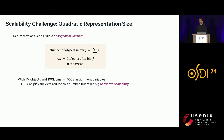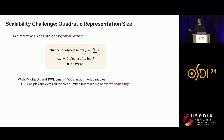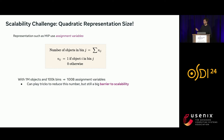Traditional representations using assignment variables, such as mixed integer programming models, require a variable for each pair of object and bin to indicate whether that object belongs to the bin. At our scale, with one million objects and 100,000 bins, that translates to 100 billion variables — so it doesn't work. While there are techniques to reduce the number of variables, such as grouping equivalent objects, these representations are still quadratic in nature and don't scale very well.